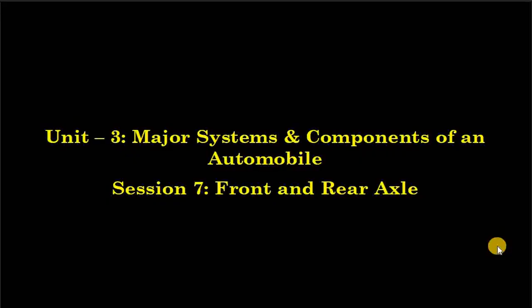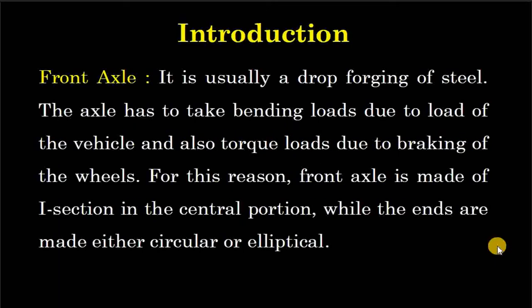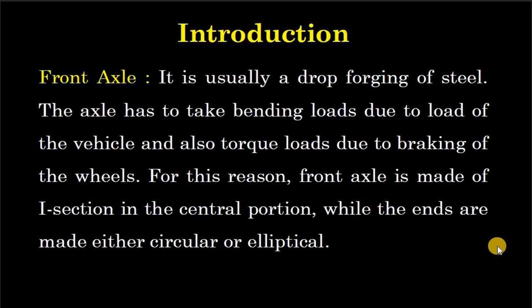Today we are going to talk about Front and Rear Axle. What is front axle? It is usually a drop forging of steel. The axle has to take bending loads due to the load of the vehicle and also torque loads due to braking of the wheel. For this reason, the front axle is made of eye section in the central portion, while the ends are made either circular or elliptical.